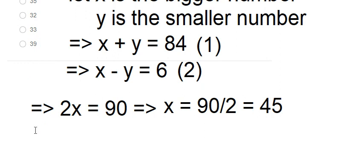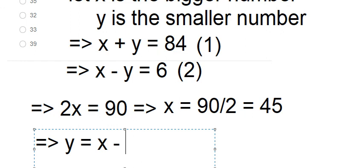And we know that the smaller number is y. Now we put y on the left, and we have y equals x minus 6 because the bigger number is bigger than the smaller, that's why we have x minus 6.